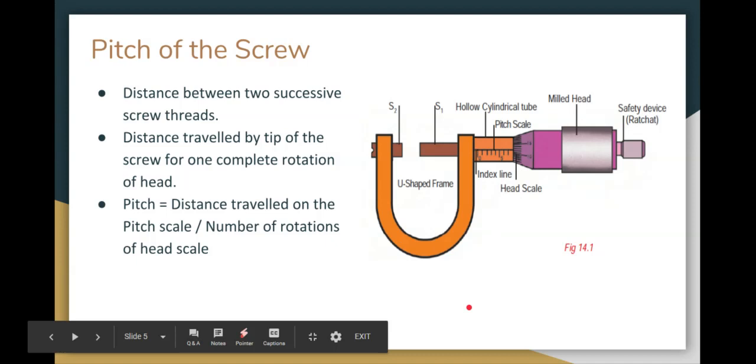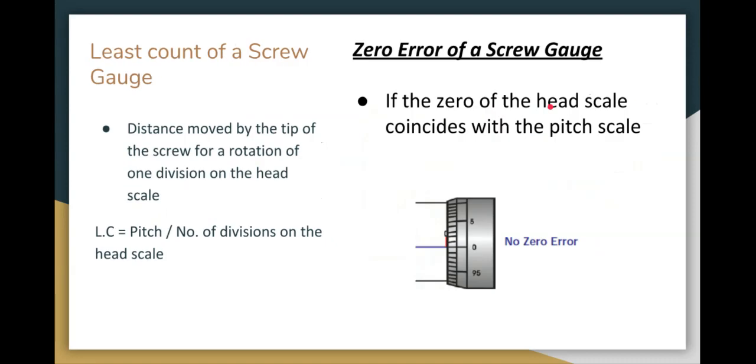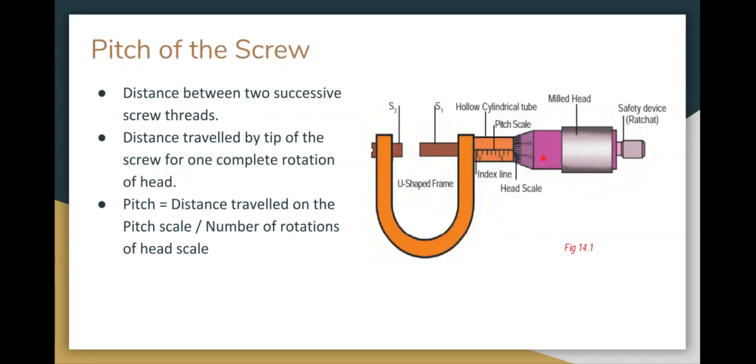Next, the pitch of the screw. In the screw gauge, there is a pitch scale as well as head scale. So in the pitch scale, the distance between two successive screw threads is the pitch. The distance traveled by the tip of the screw for one complete rotation of the head scale, that distance is the pitch.